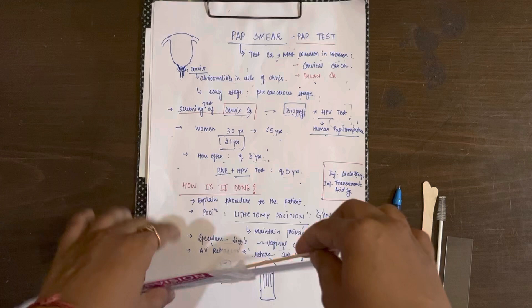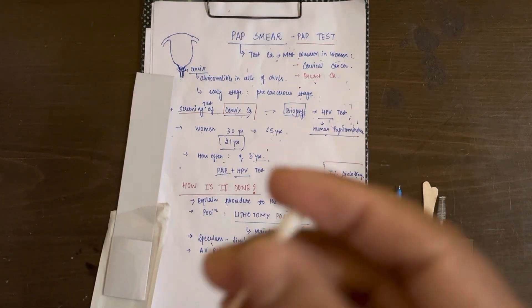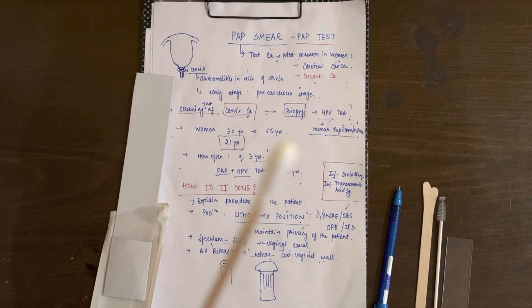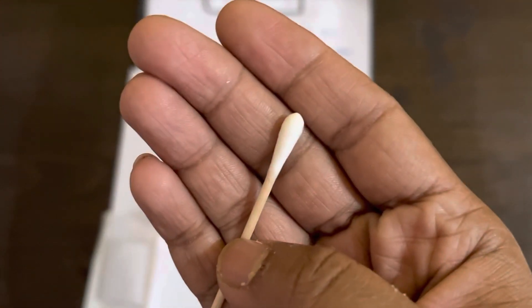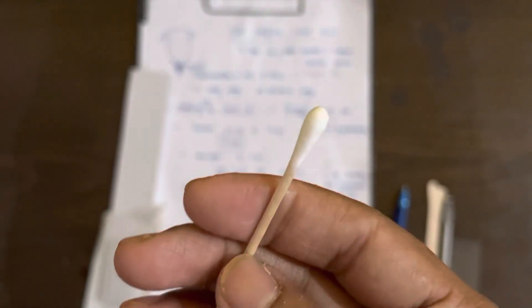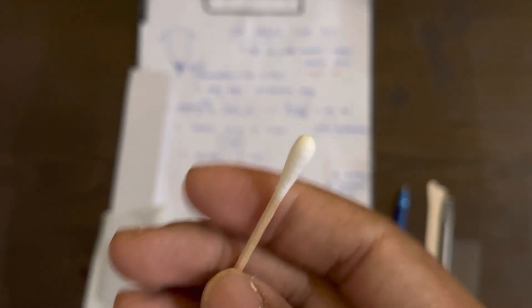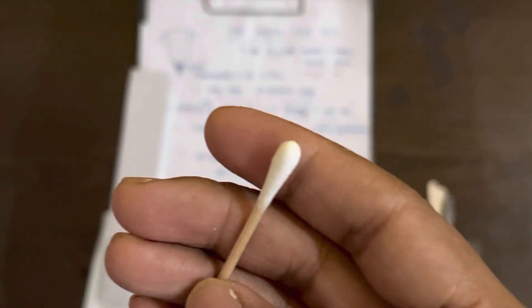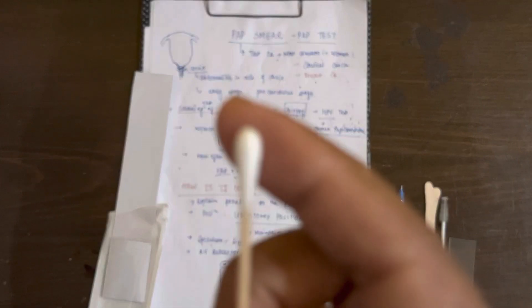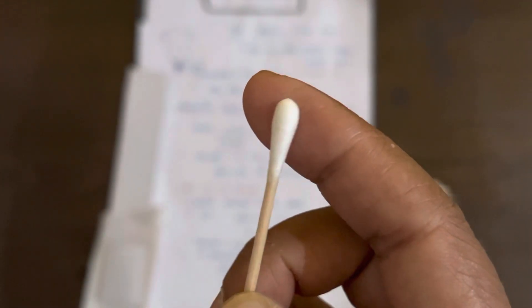You also have this cotton-tipped applicator. This can be used to send any kind of culture if you want, like if you see pus collection in the cervical os or any abnormalities. You can take the sample of that pus with this cotton-tipped applicator and send it for culture.